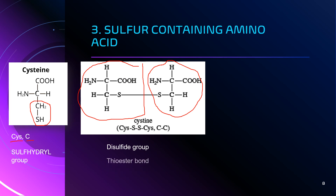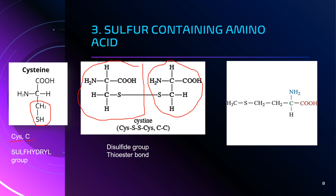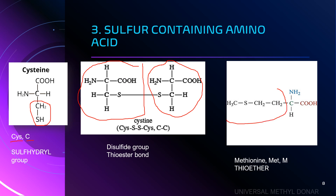The second sulfur-containing amino acid is methionine. The three-letter code is MET and the single-letter code is capital M. Methionine is a thioether, and its R group is a thioether structure. Methionine is known as the universal methyl donor.